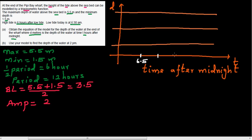One full cycle spans one period of 12 hours. So starting from 6.5 (6:30 am), adding 12 hours gives 18.5 — that's 6:30 pm. A quarter cycle is three hours, so the next key point is 9.5 (9:30 am), and then 12.5 (12:30 pm).